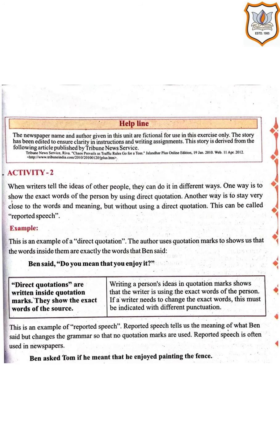After this we have Activity 2. When a writer tells the ideas of other people, they can do it in different ways. One way is to show the exact words of the person by using direct quotation. Another way is to stay very close to the words and meaning but without using a direct quotation. This can be called reported speech.